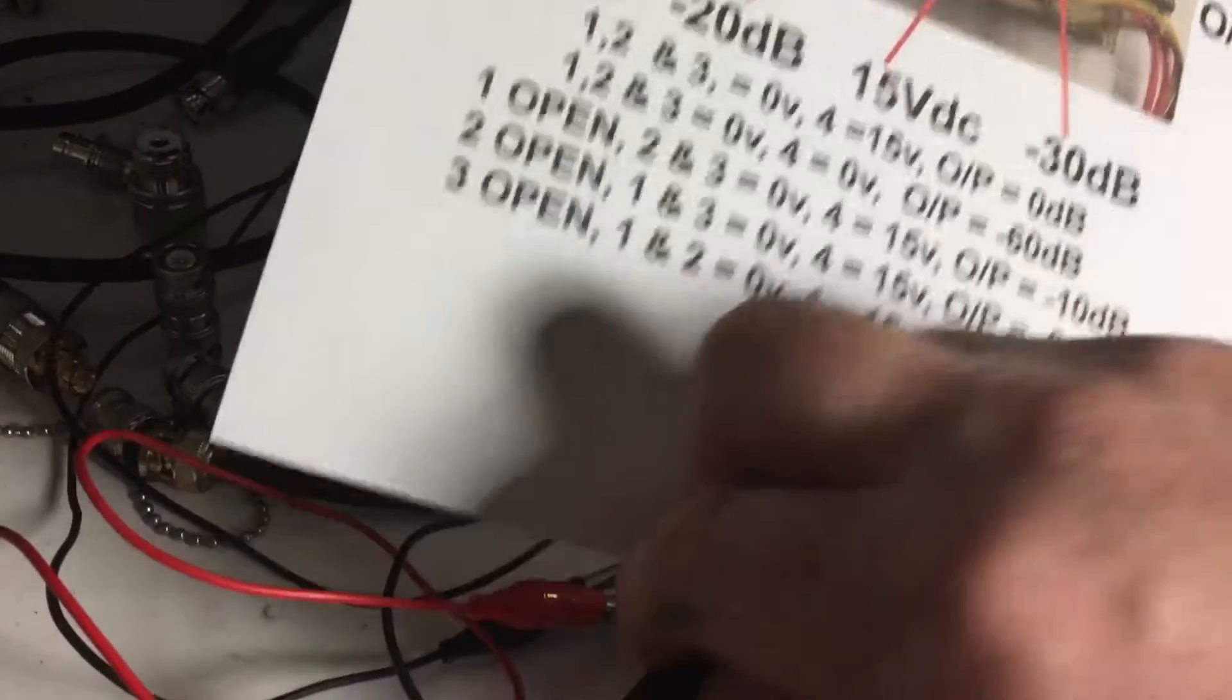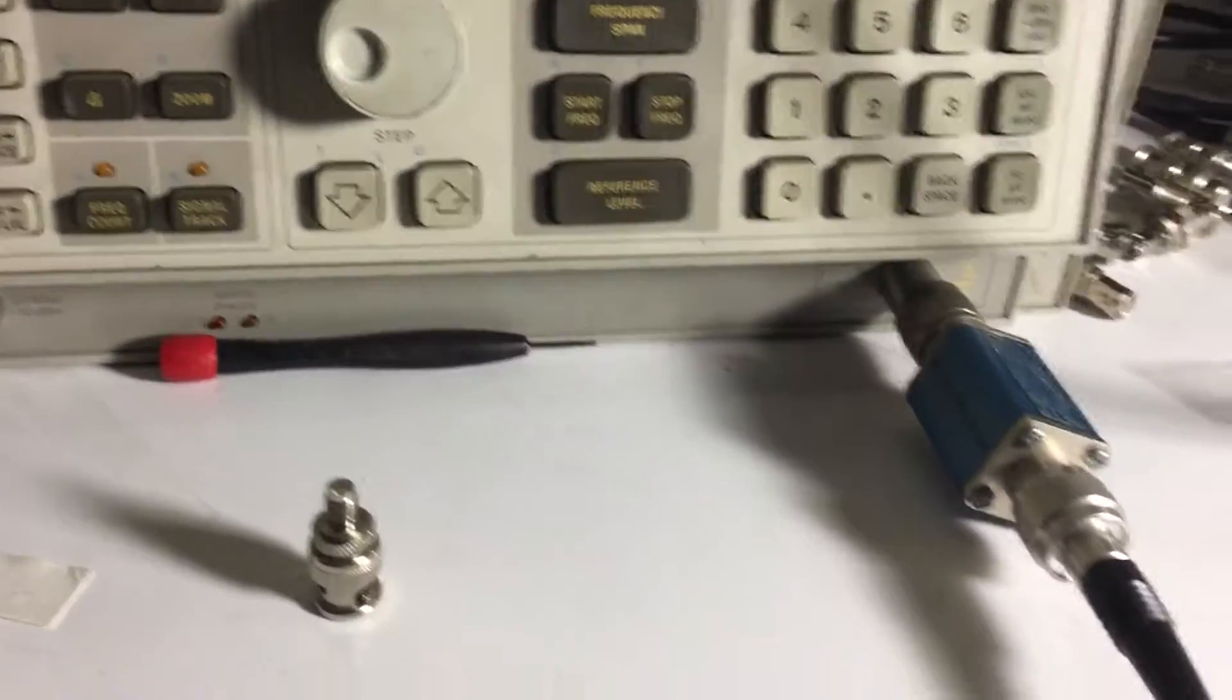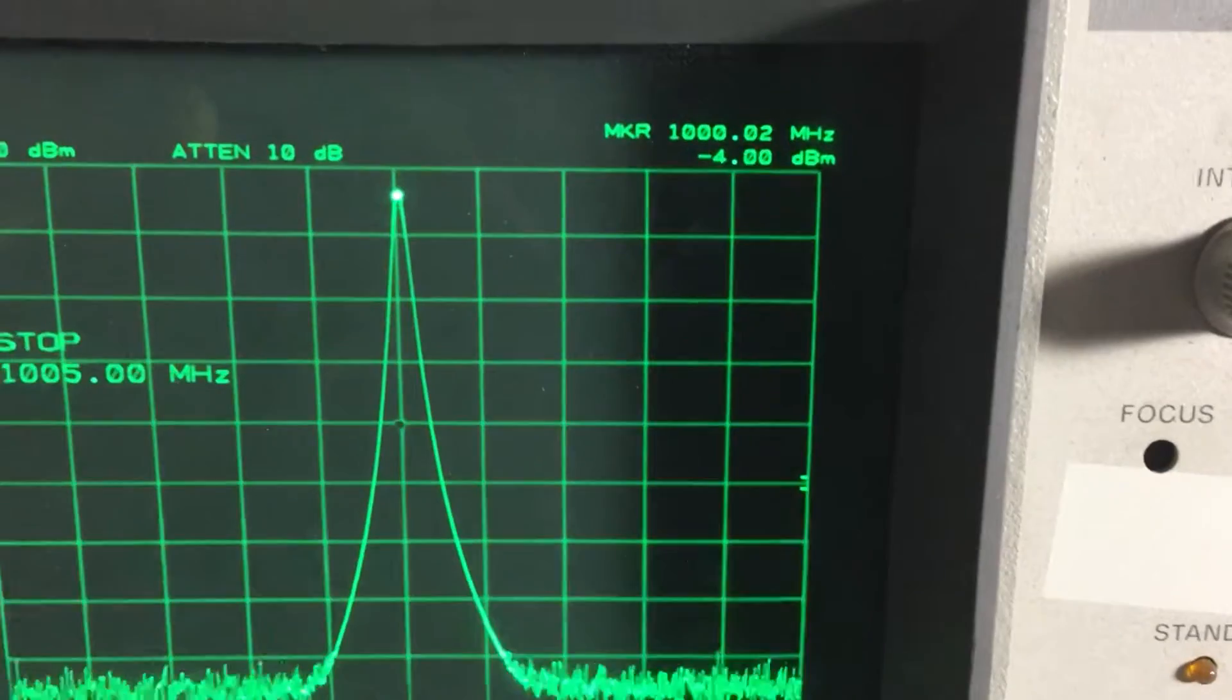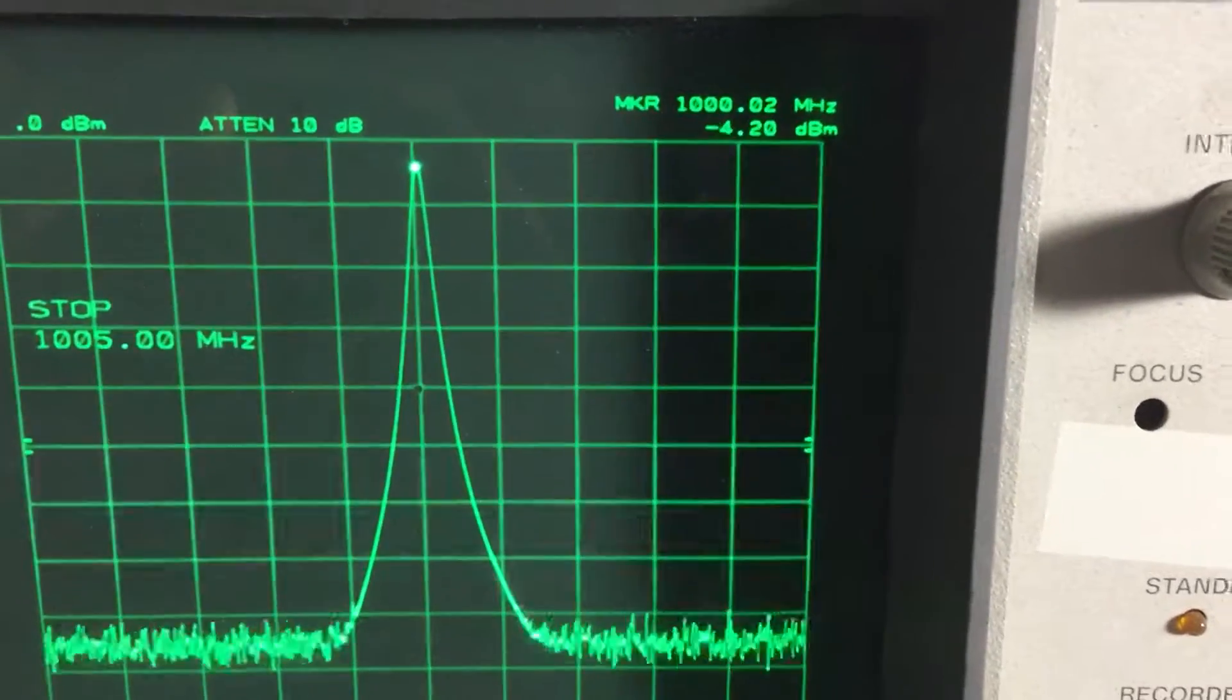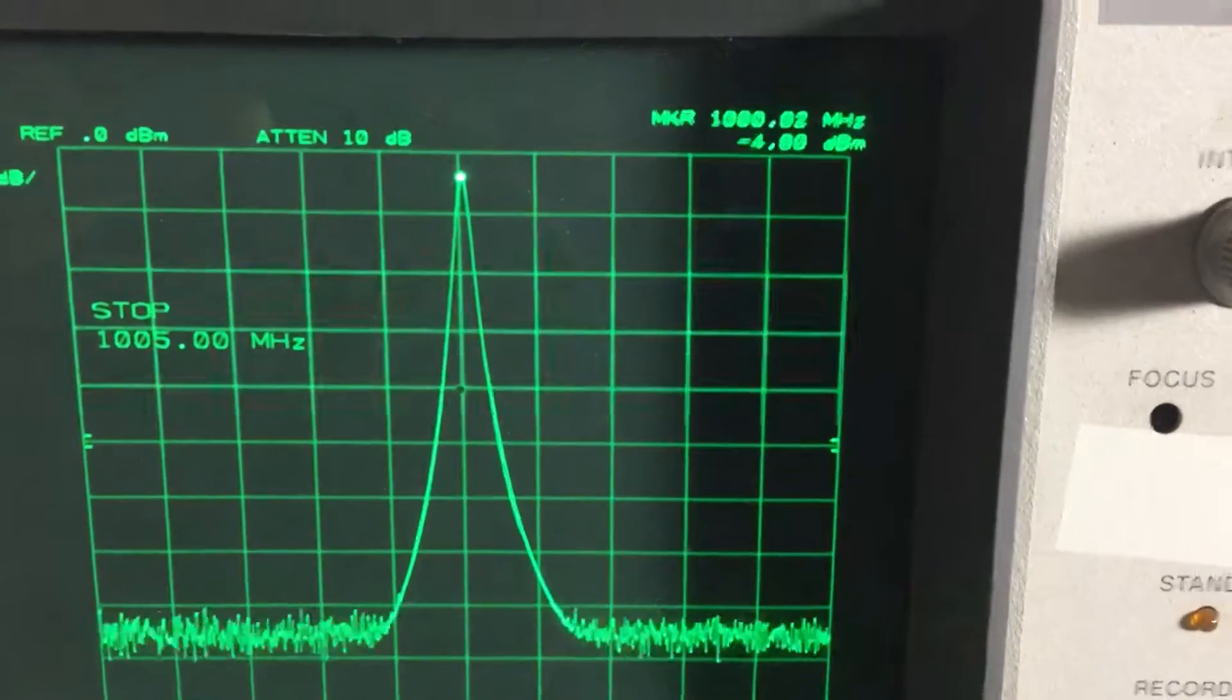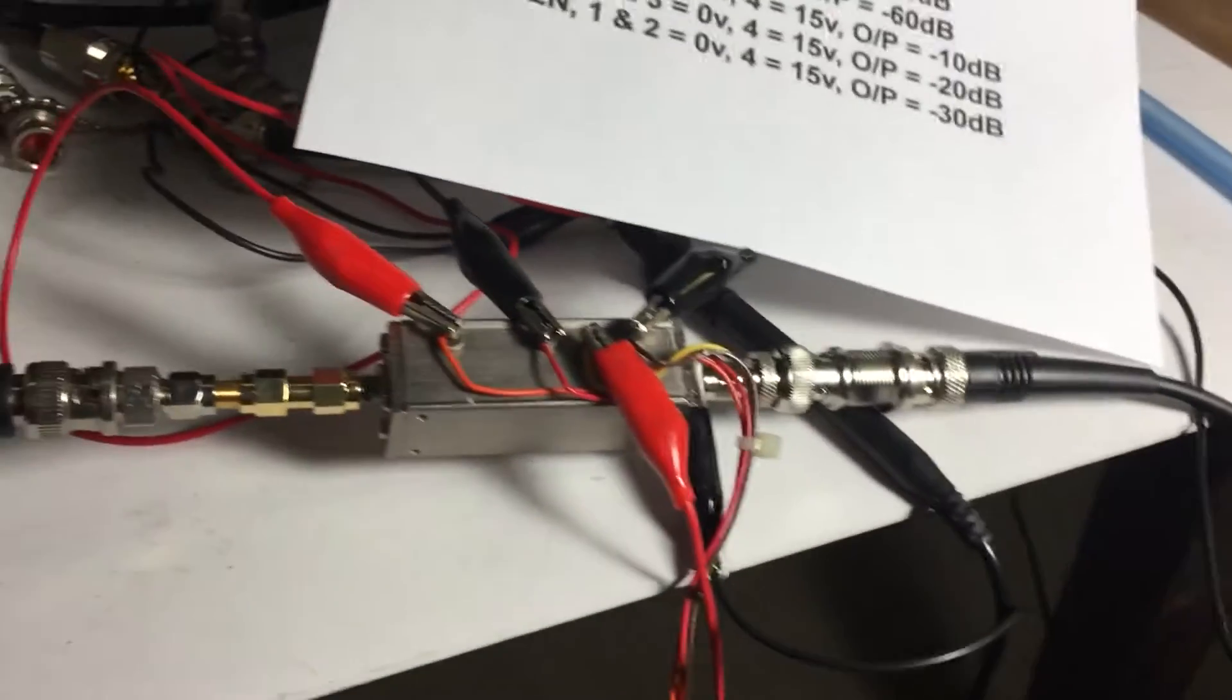Put that back on, just looking at the results there. So I am showing a minus 4dB at 1 gig, but I think that's down to my leads, not particularly good setup, messy to be honest.